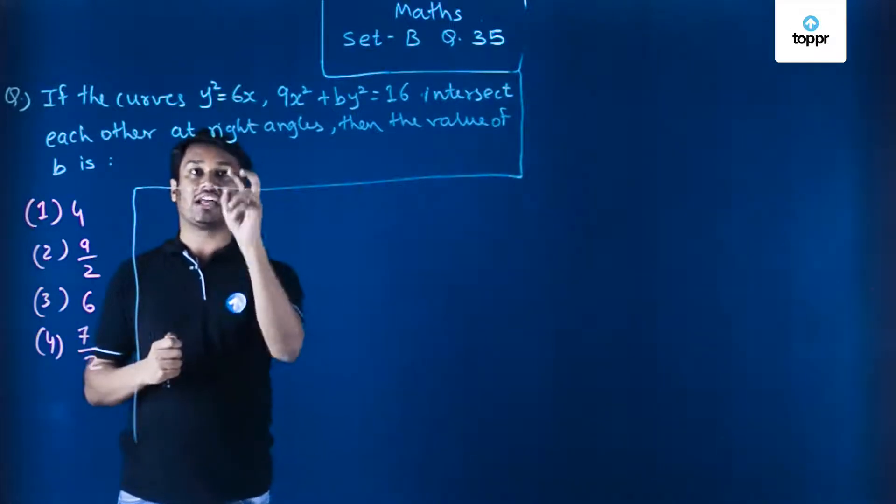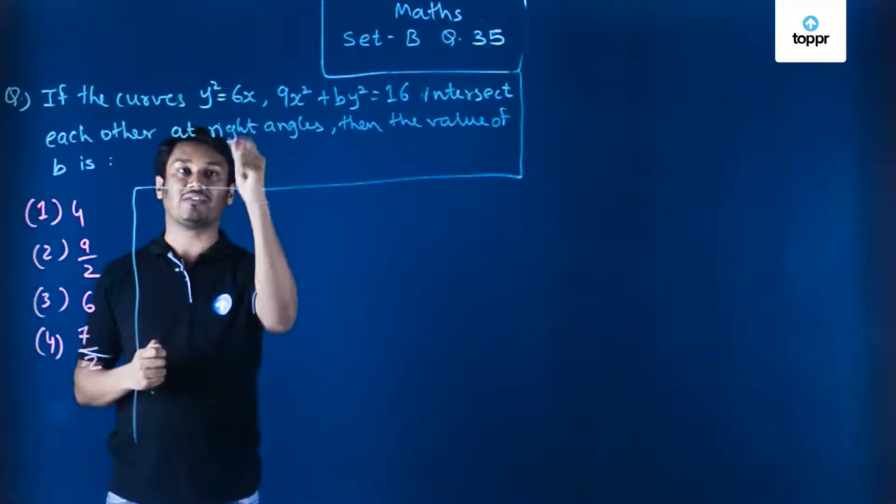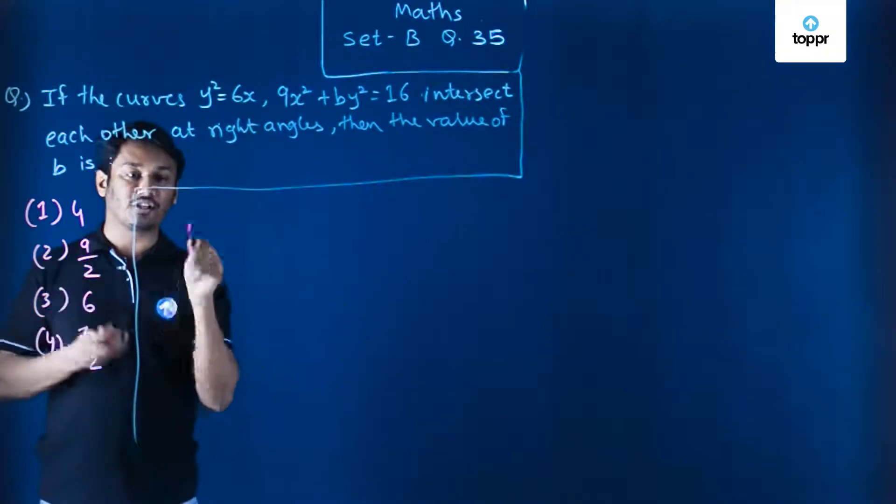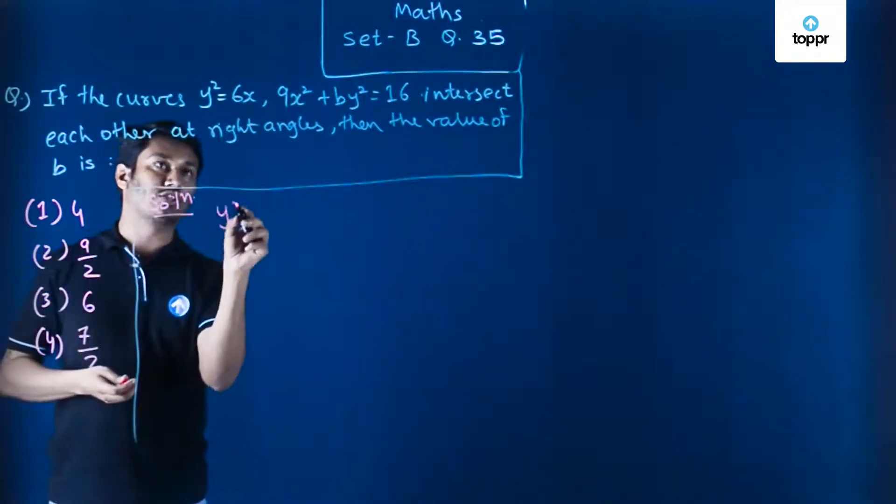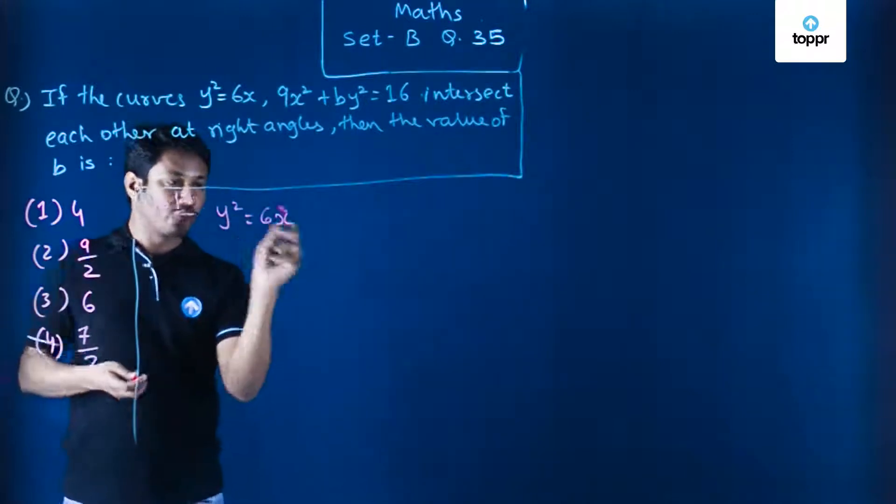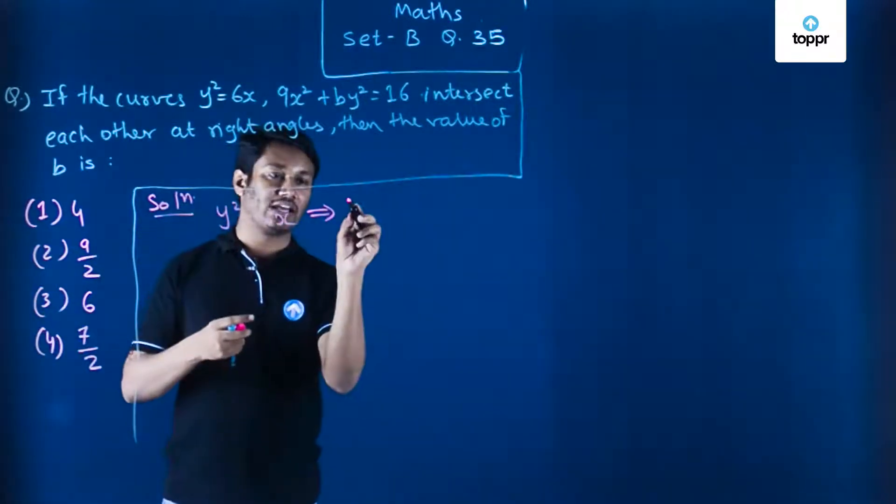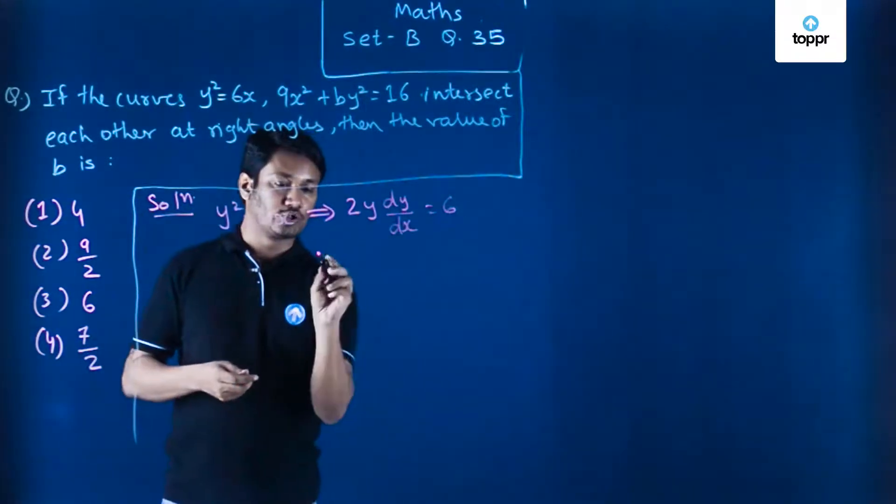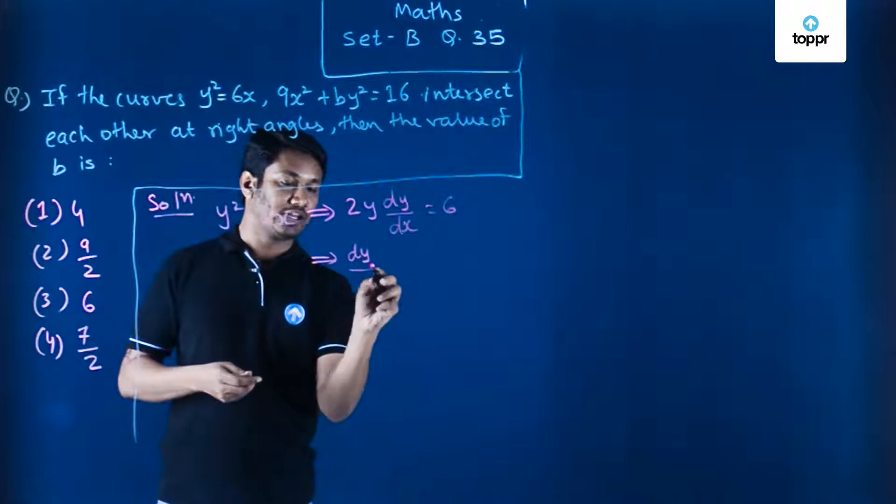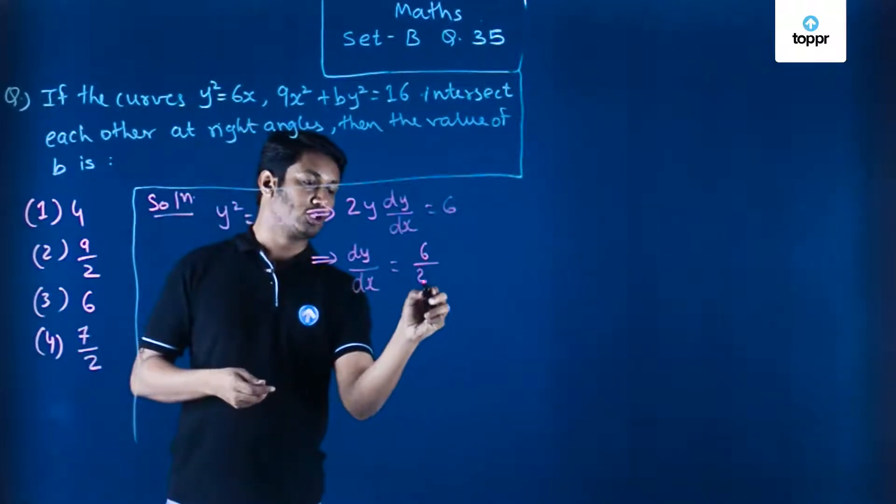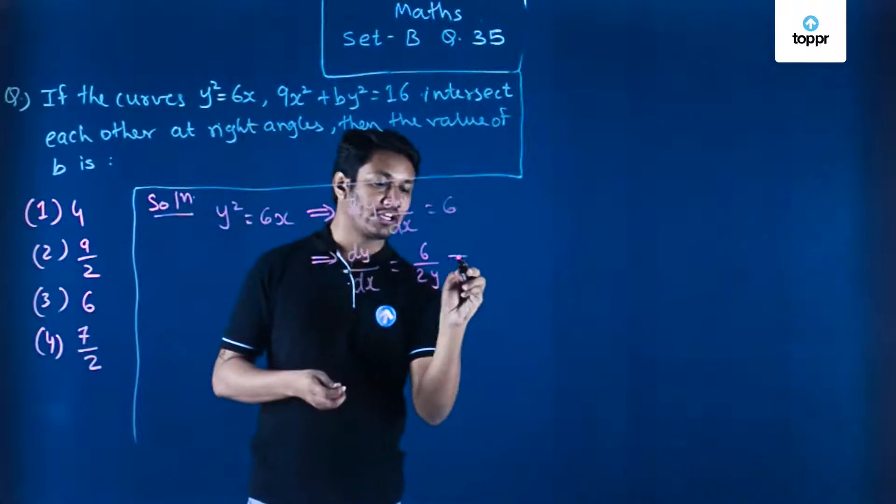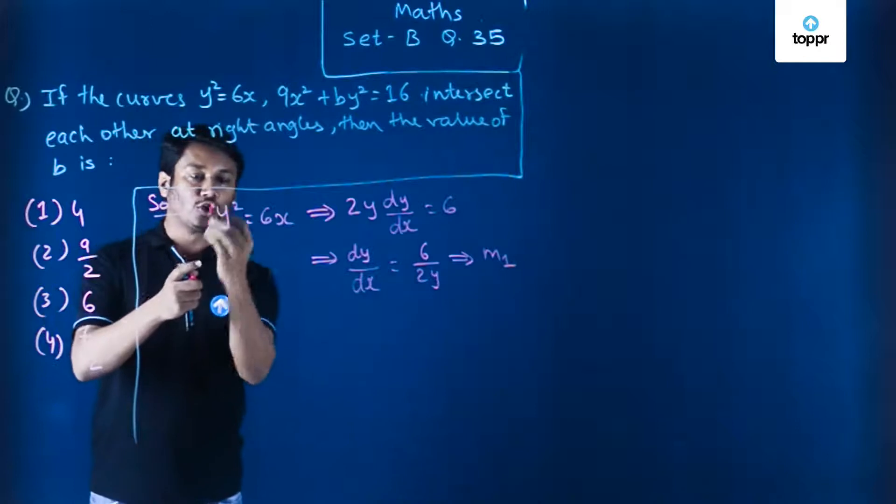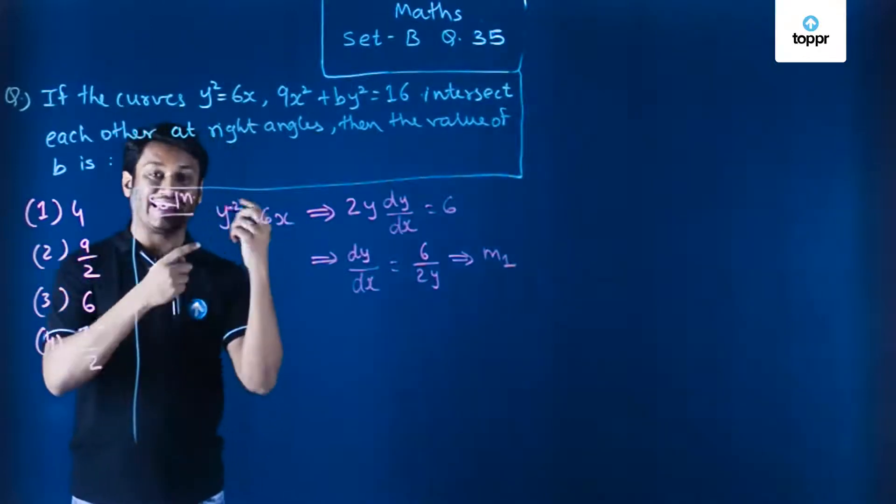What we are going to do is find out the slope of those two tangents in the form of dy/dx from the equation of the curves. So let us start. The first equation given to us is y² = 6x. Now from here, if I try to find out dy/dx, it is 2y dy/dx = 6. So the value of dy/dx becomes 6/2y, and I can call it m₁.